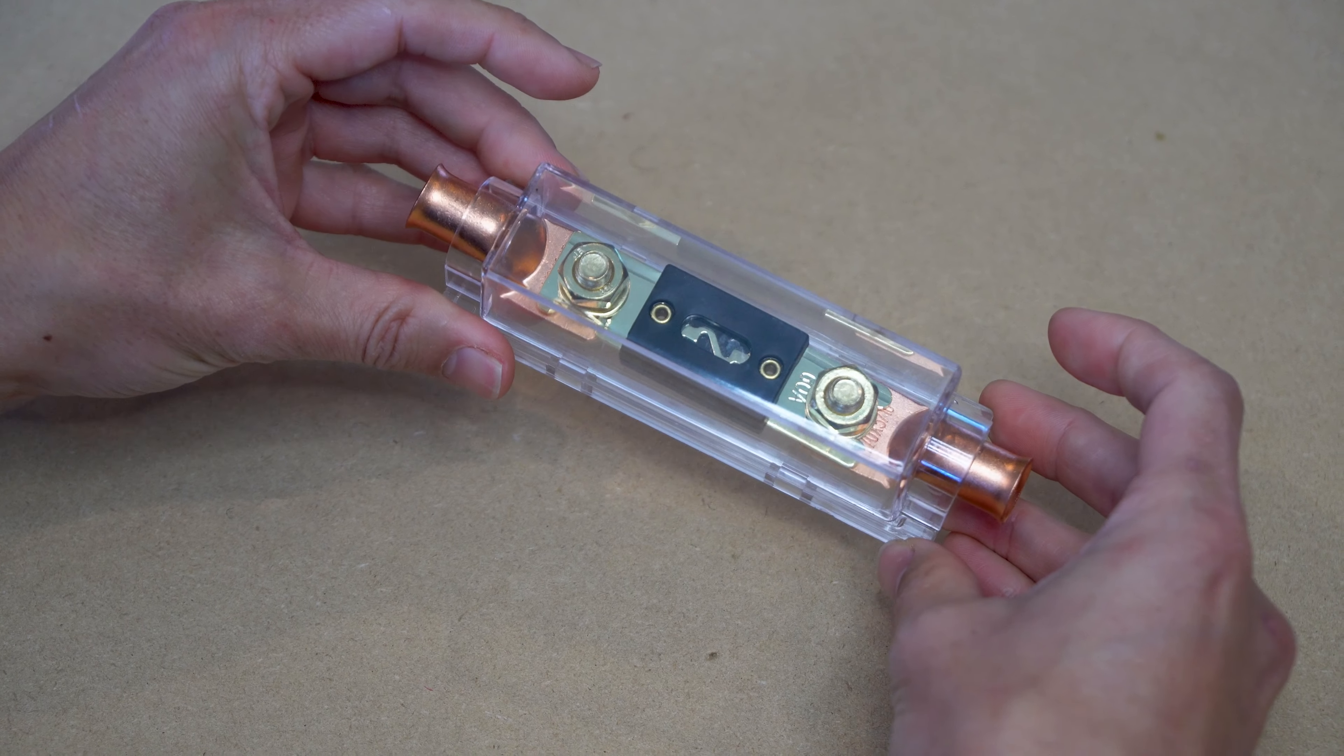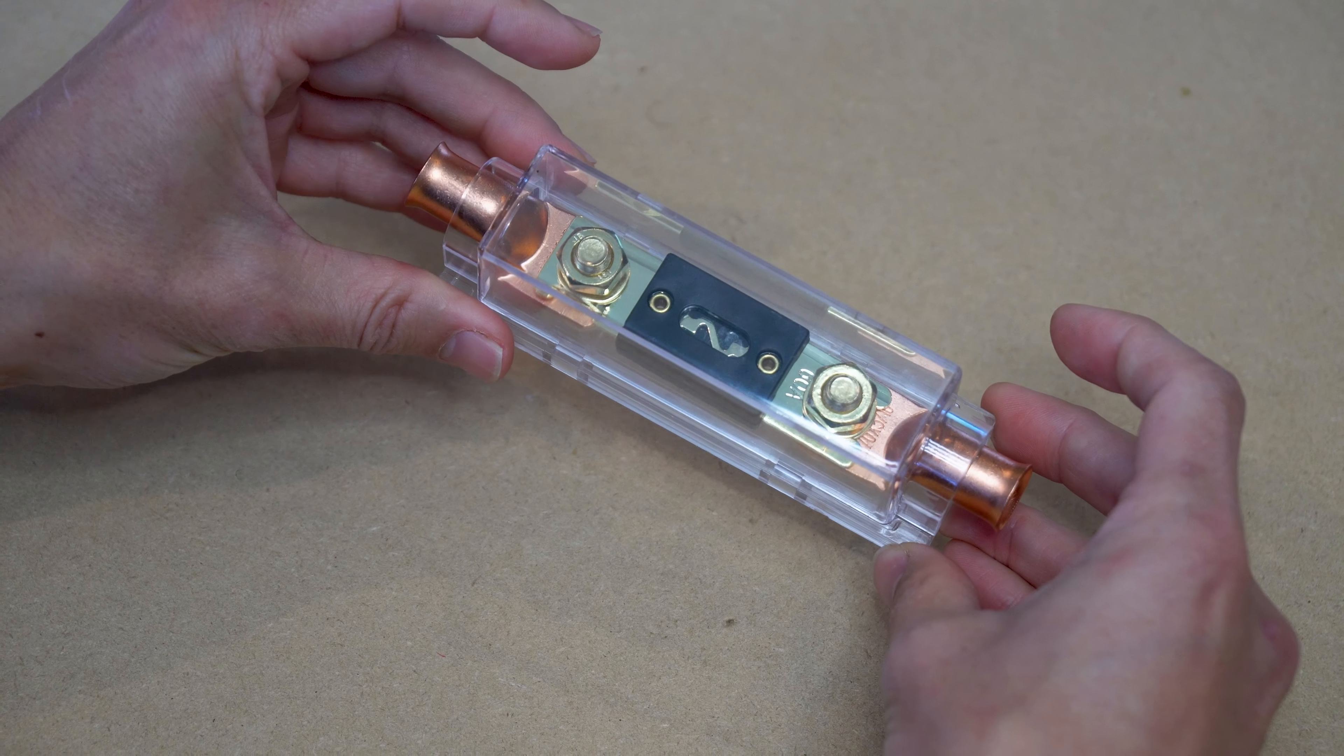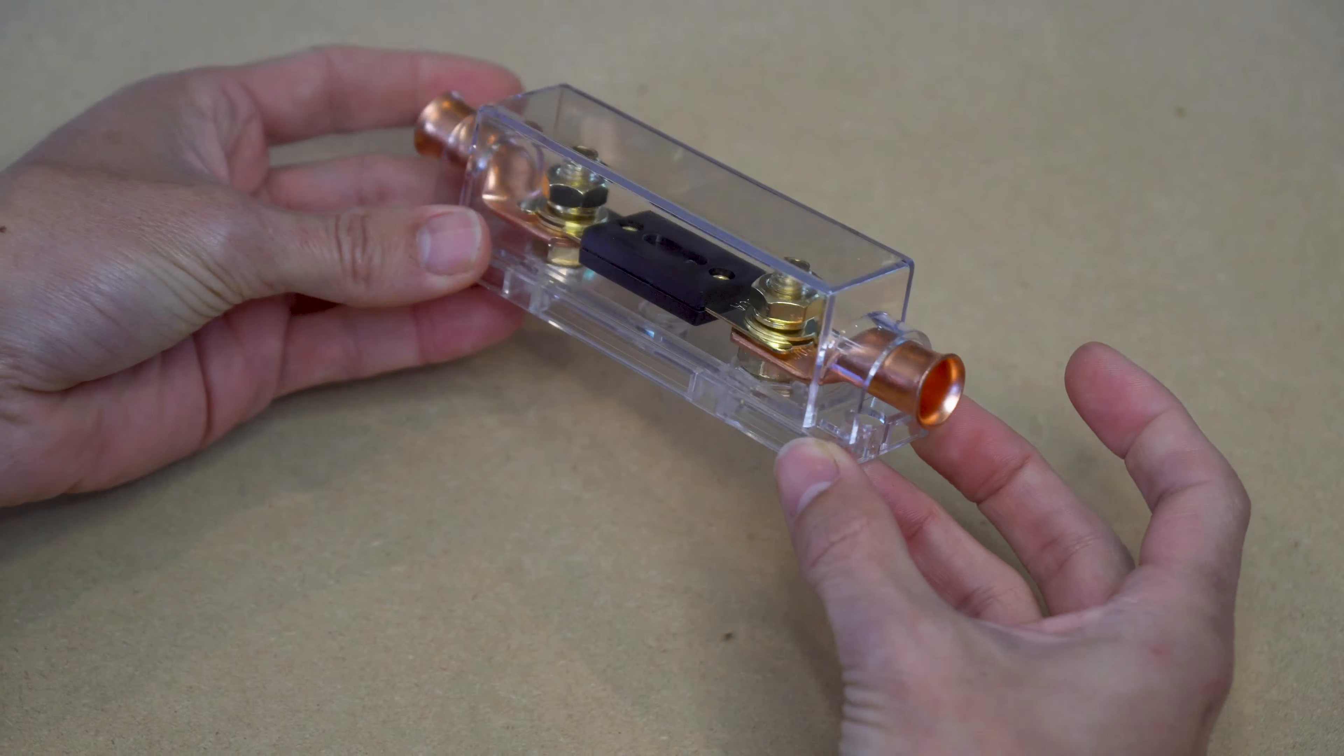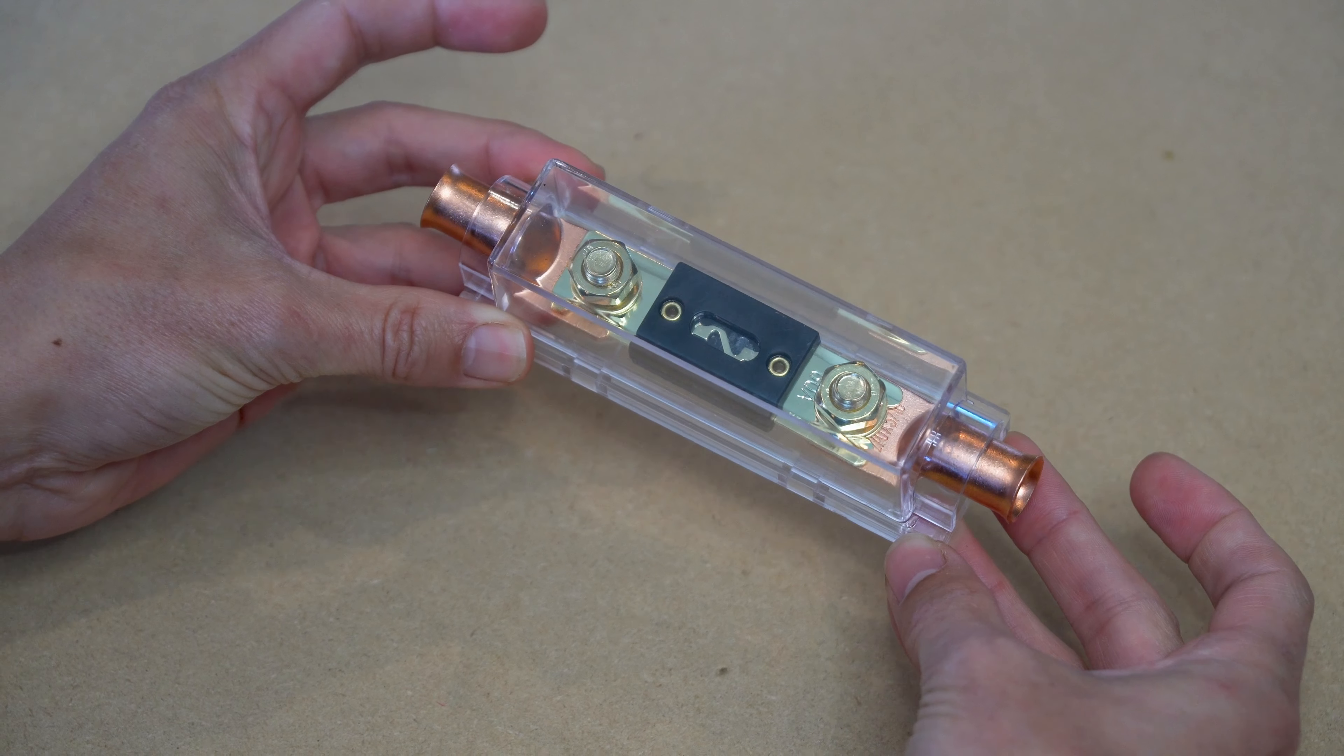We've been using ANL fuses like this in our camper van for over 4 years to protect our DC to DC charger wiring and recommend them. Thanks for watching.